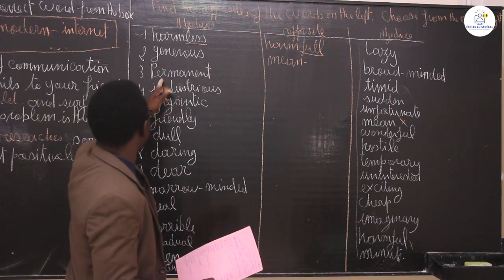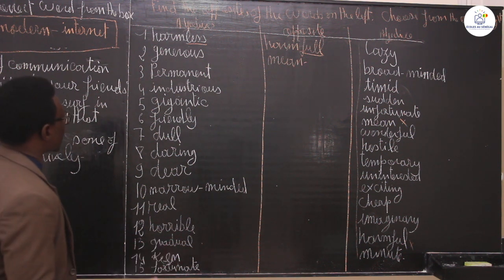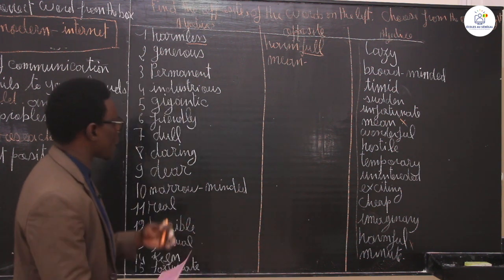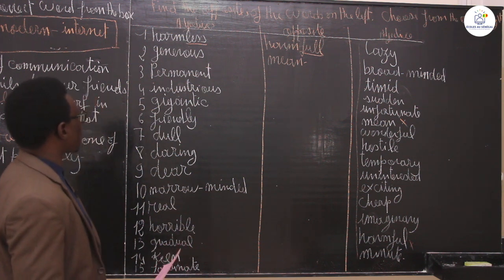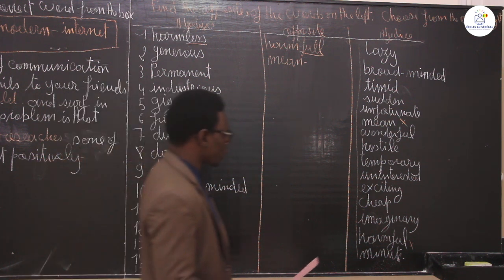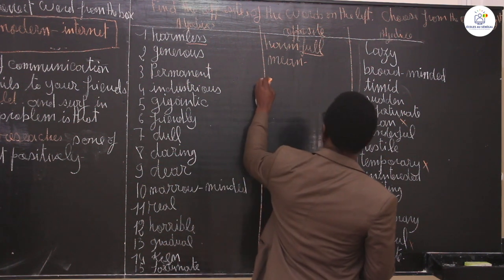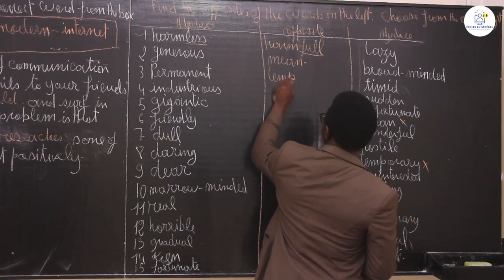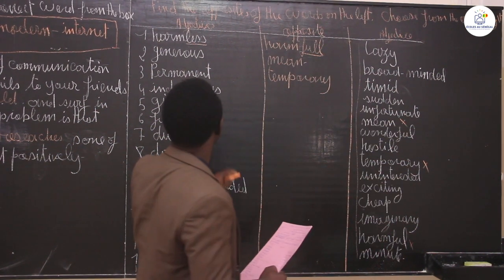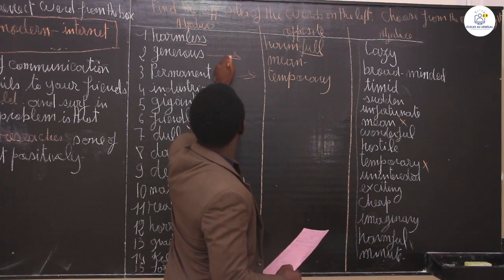You have the word permanent. What is the opposite of permanent? Something permanent happens every time, regularly. The opposite of permanent in this list is, of course, temporary. Temporary is the opposite of permanent.